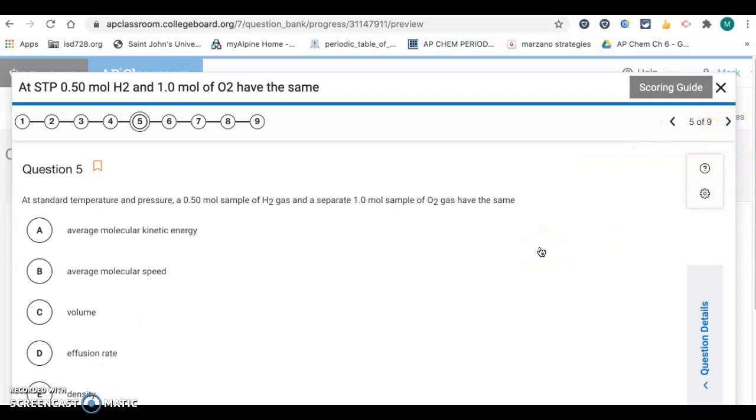Question 5. At standard temperature and pressure, 0.5 mole sample of H2 gas and a separate 1 mole sample of O2 gas have the same. It's going to be, they both have the same temperature. So this is in the notes. If you have two different gases at the same temperature, they're going to have the same average kinetic energy. So that's got to be letter A. They'll have different speeds though because the different gases will have different masses. The hydrogen is lighter, so it's going to have a higher average molecular speed.